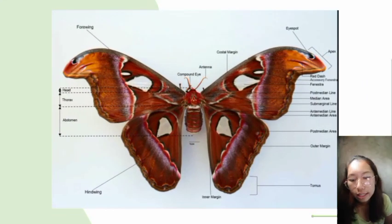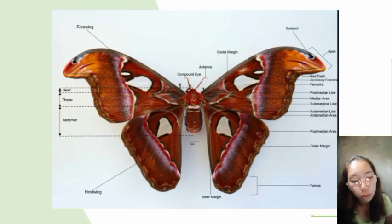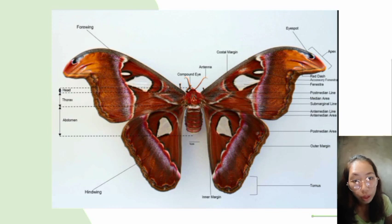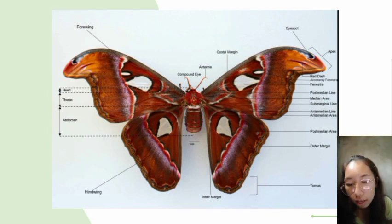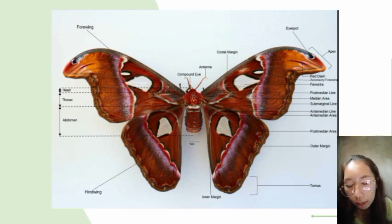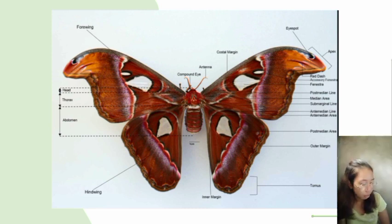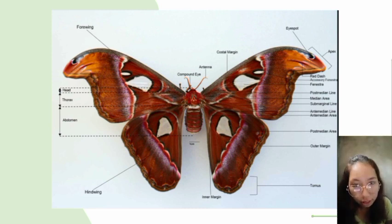In this slide, we have a photo of Atacus atlas with labeled parts. We have the three major segments — the head, thorax, and abdomen — as well as the other parts.